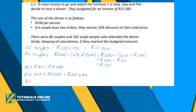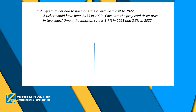Let's go to the next question. This is a follow-on from the previous one. It says: Sia and Pitt had to postpone their Formula One visit to 2022. A ticket would have been 455 dollars in 2020. Calculate the projected ticket price in two years' time if the inflation rate is 3.7% in 2021 and 2.8% in 2022.